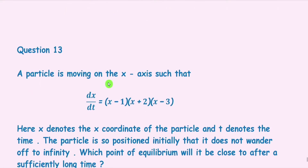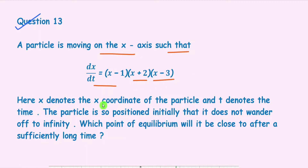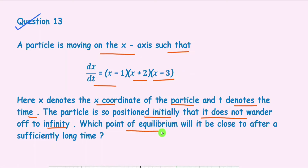Let's start with question number 13. The question says: a particle moving on the x-axis such that dx/dt equals (x−1)(x+2)(x−3), where x denotes the x-coordinate of the particle and t denotes the time. The particle is positioned initially such that it does not wander off to infinity. Which equilibrium point will it be closest to after a sufficiently long time?